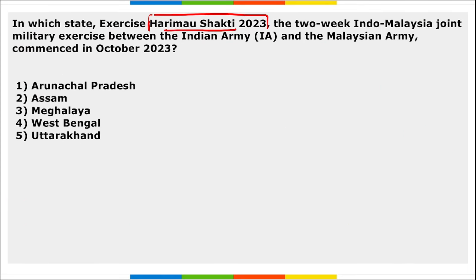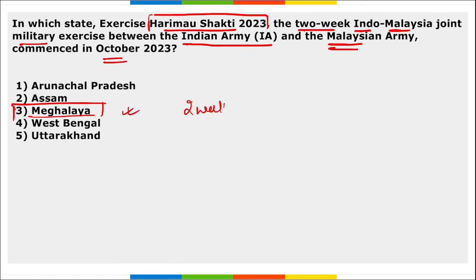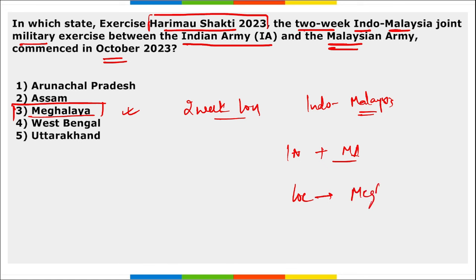Next: Exercise Harimau Shakti. This was a 2-week Indo-Malaysia Joint Military Exercise between Indian Army and Malaysian Army that commenced in October 2023. It was held in Meghalaya and is scheduled to continue till 5th November. The last edition of this exercise was held in Malaysia. These were the defense questions.